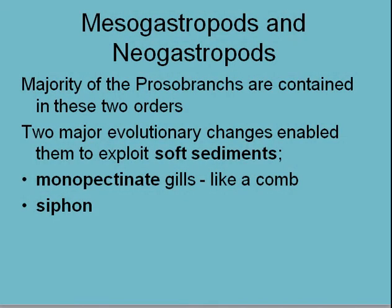Carrying on with the prosobranchs and the subclasses mesogastropods and neogastropods. We finished archaeogastropods, so now we move to the middle gastropods and new gastropods — meso and neo. These are structurally derived from the archaeogastropods, so we're going through the evolutionary development of gastropods, and we'll see some of the features that are different in these ones that have allowed them to radiate out to unexploited habitats.